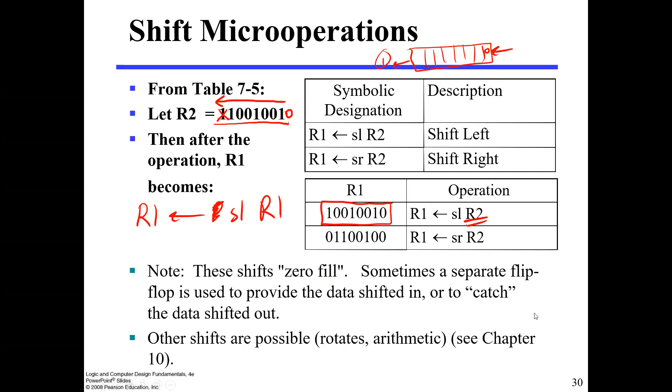For shift right, it will be like this. We will add zero to the left, and we will push out the least significant bit. So the result will be 01100100.